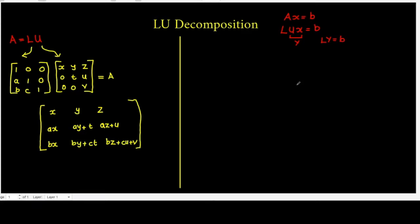Assuming Ly equal to B, this will give you the values of Y, and then you solve UX equal to Y. This will give you the values of X. We will see it with the help of an example.